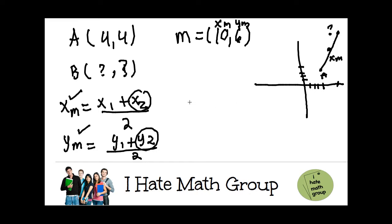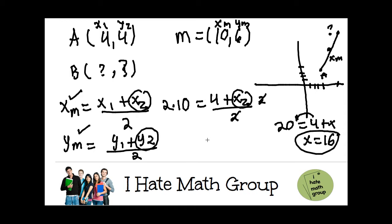So let's go ahead and figure it out, what is point B. So what I'm going to do, I'm just going to plug for XM, I'm going to put 10. This is 4 plus X2, which I don't know, and then I'm going to solve for X2. The first step, I multiply 2 on both sides to eliminate the 2. So this is going to be 20 equals 4 plus X, and then I move the 4 here, so X equals 16. So I already got my X.